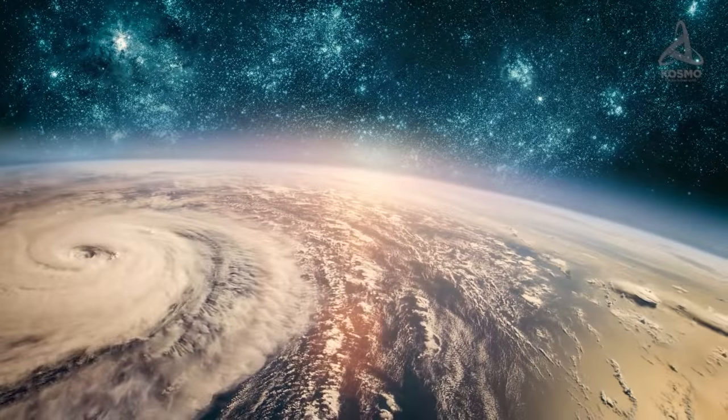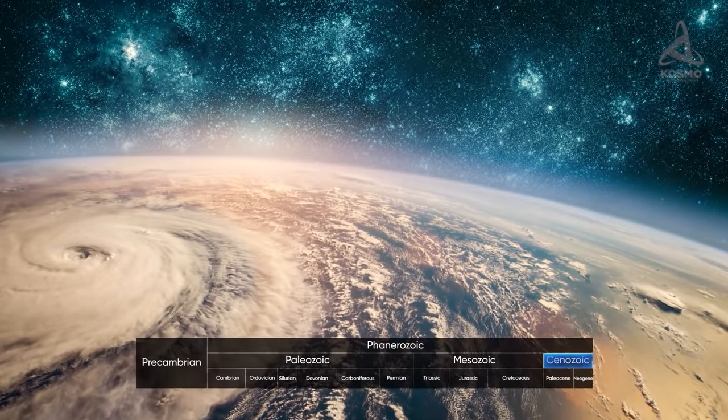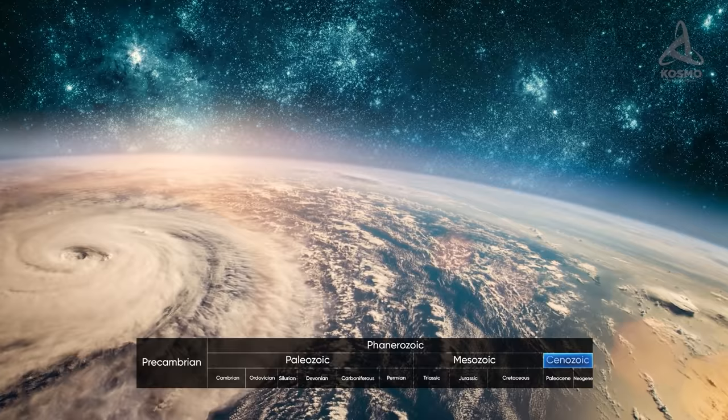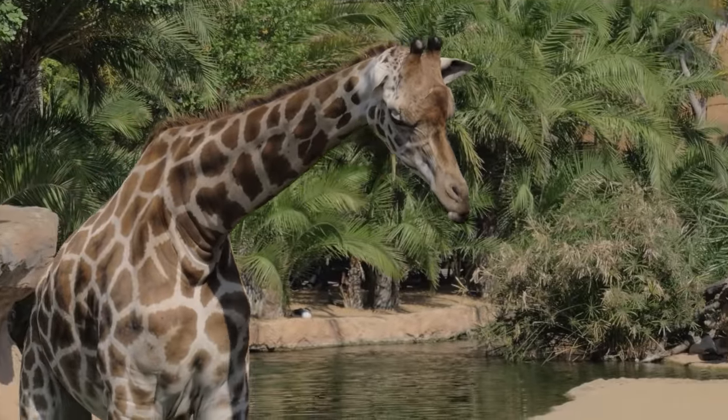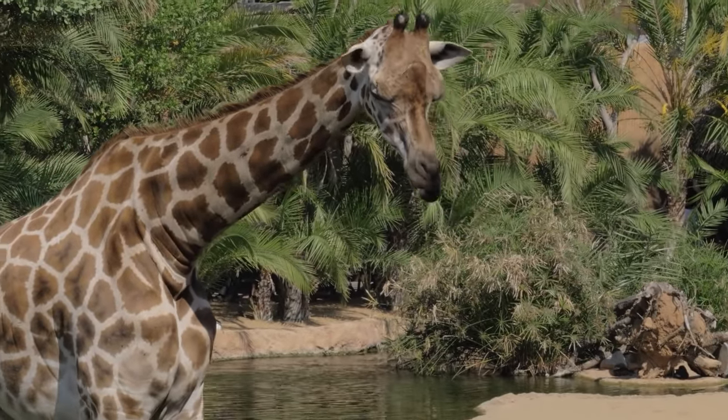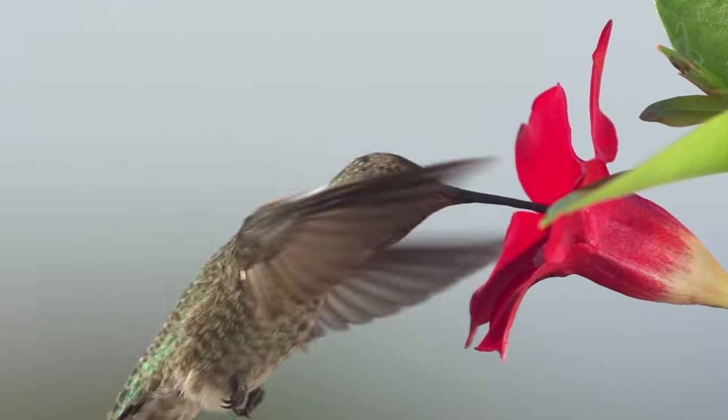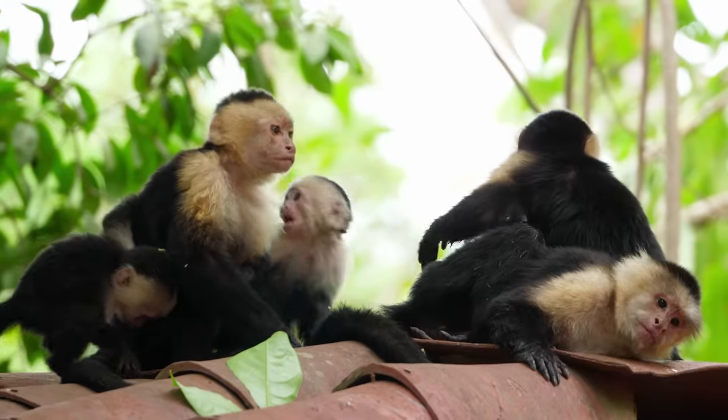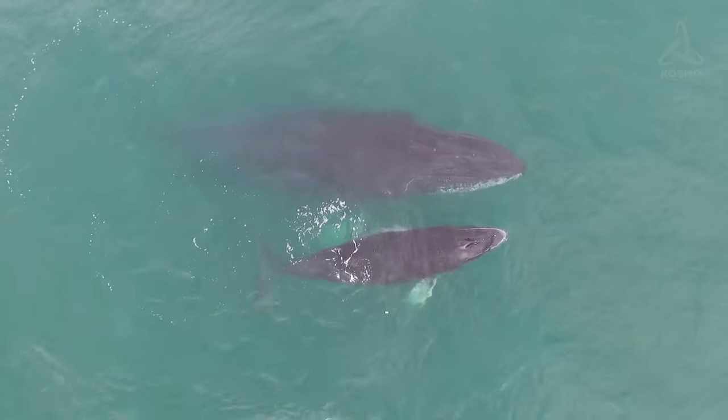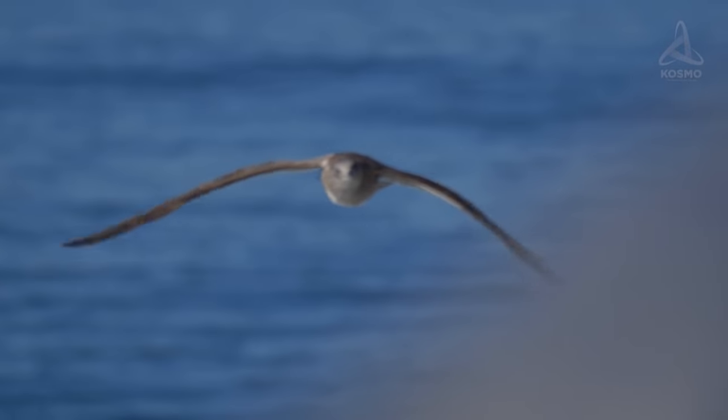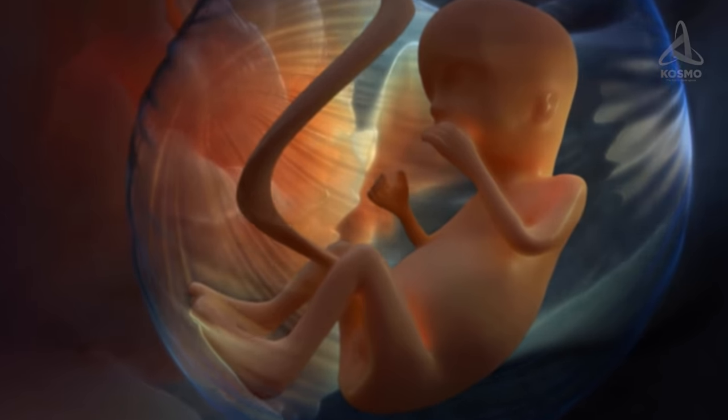The Cretaceous Tertiary extinction event heralded the beginning of a new geologic era – the Cenozoic, which is still in progress. Throughout this era, mammals, birds and flowering plants have been actively evolving and spreading across the Earth. Mammals settled all over the planet, inhabiting it literally everywhere – from tropical areas to ice caps at the poles, and from the depths of the oceans and the planet's interior to air currents up high. Eventually, evolution produced mankind.